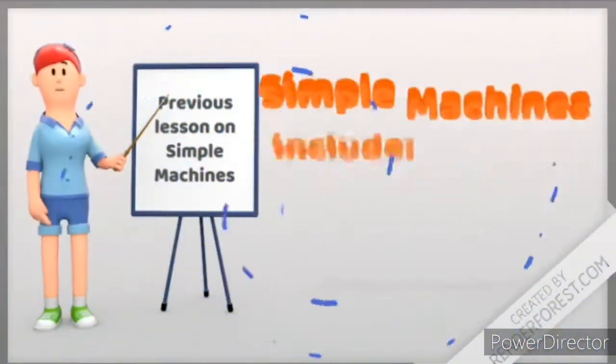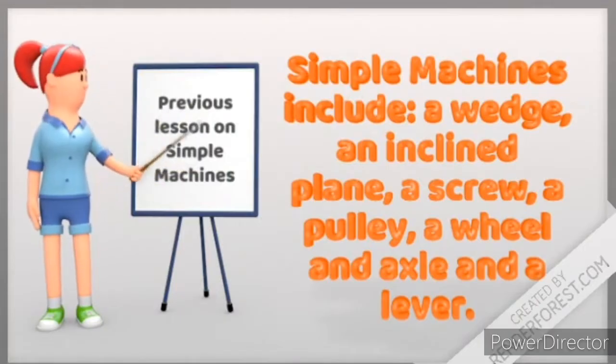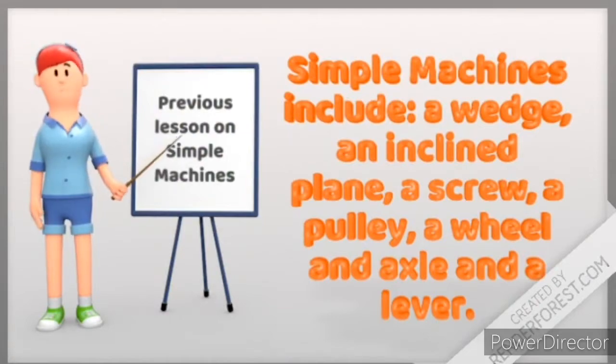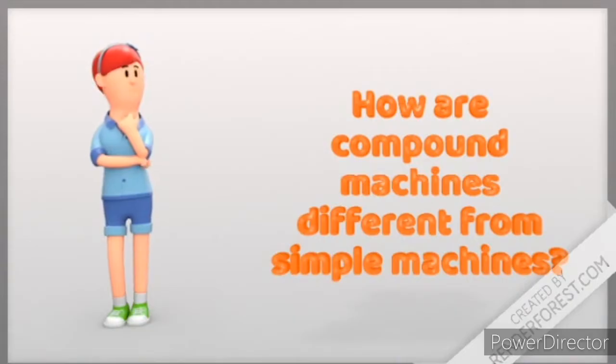If you can remember our previous lessons about simple machines that include a wedge, an inclined plane, a screw, a pulley, a wheel and axle, and a lever, you will determine how to identify simple machines from these compound machines. But how are compound machines different from simple machines?